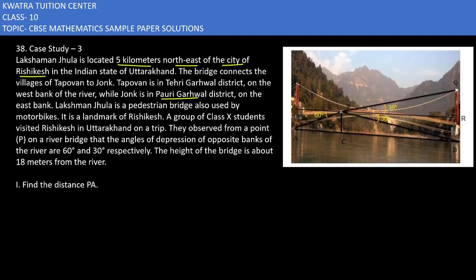So we have been given some information about distances and angles to find. The angles mentioned are already given. Looking at the diagram, we have point P, point A, and point C. The angle at one side is 60°, and this will be 60° as well. Now we need to find the distances. PC is the height from the bridge to the river, which is 18 meters.